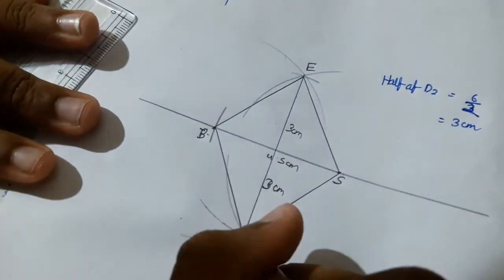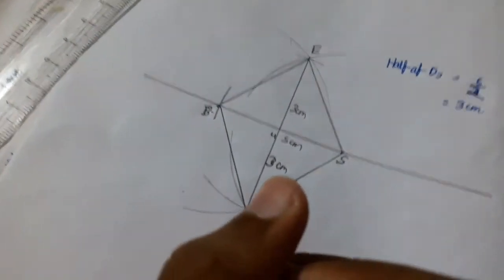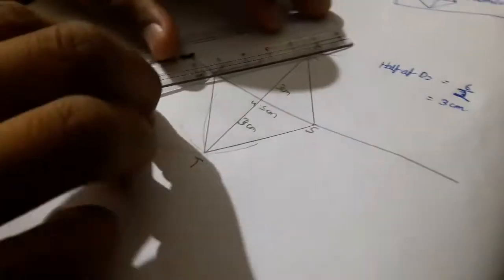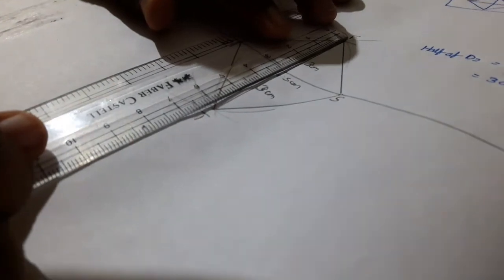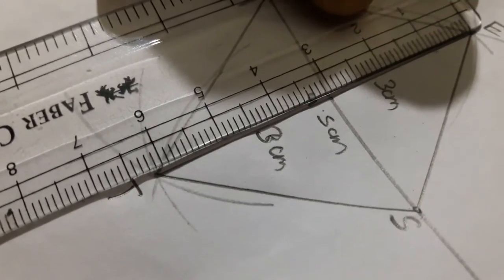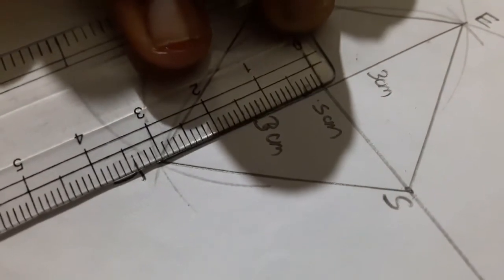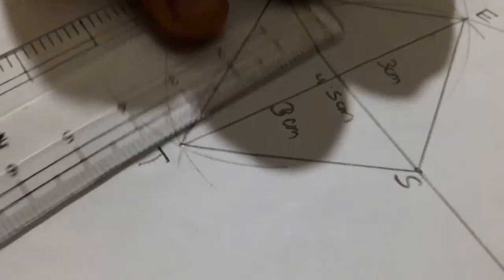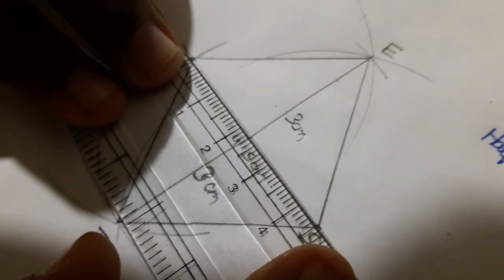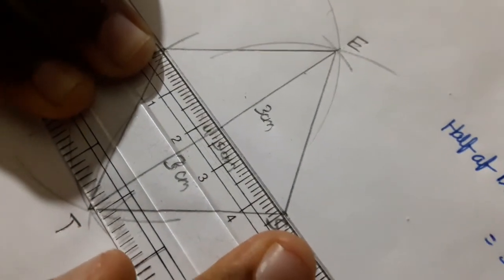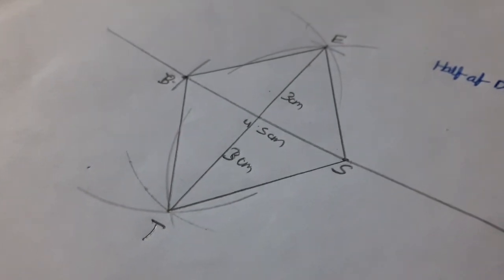Now this becomes your diagonal. As you can measure, this is 3 cm, that should be exact. This is 3 cm, as you can see, this is to be exactly 3 cm. And this is 4.5 cm as you can see. So yeah guys, now you are successful in drawing a rhombus, thank you.